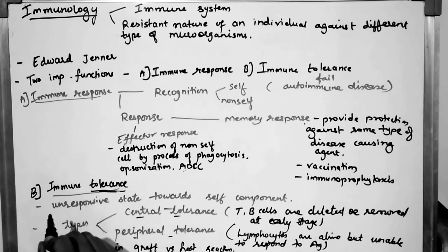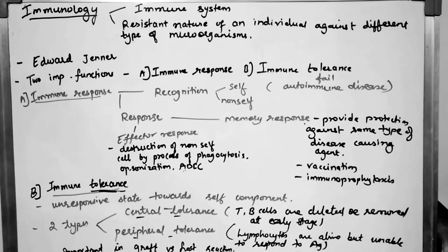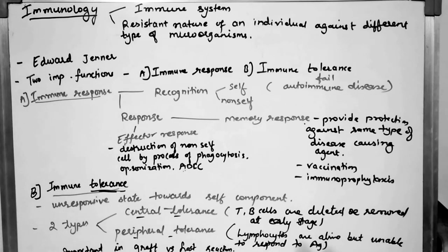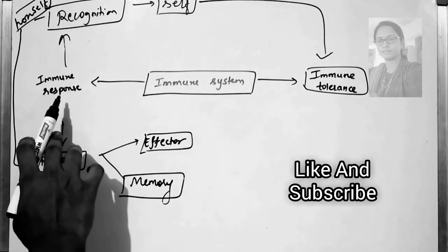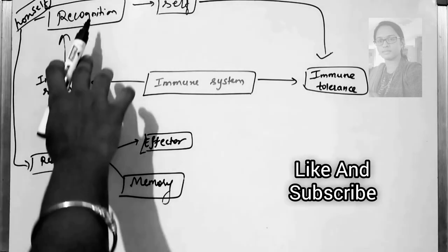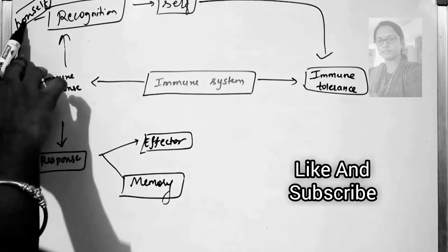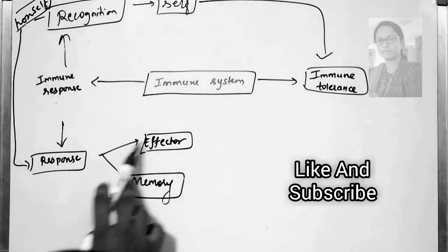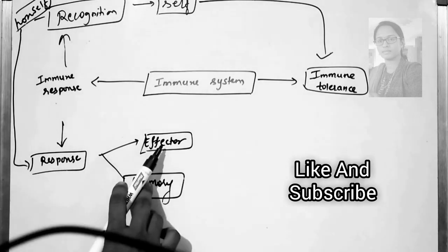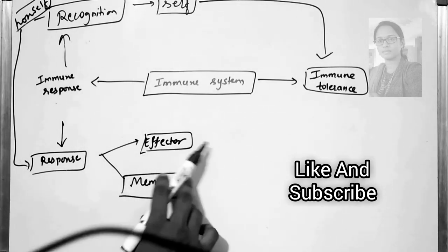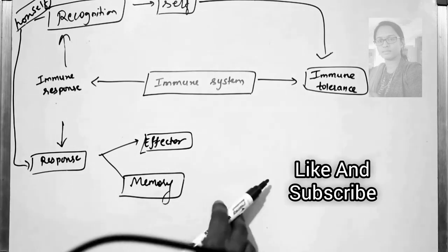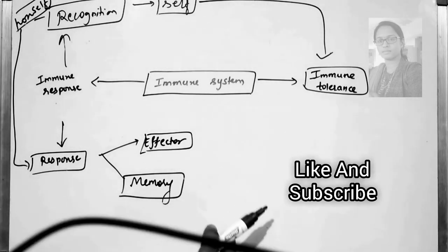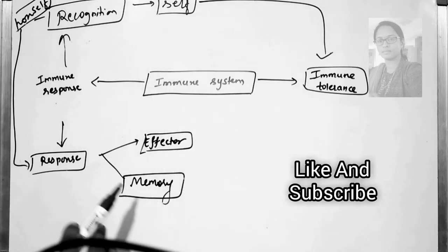Now we will see the diagrammatic representation — an overview of the immune system. The immune system has two parts: immune response and immune tolerance. In immune response, recognition and response occur. If it recognizes self, it will have tolerance; if it recognizes non-self, it will have a response. That response includes effector response — phagocytosis, opsonization, ADCC — and memory response, which involves vaccination or immunoprophylaxis, meaning the production of active or passive immunity.